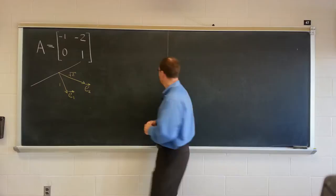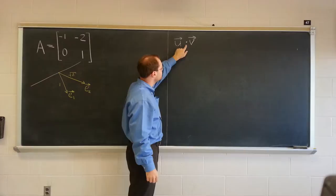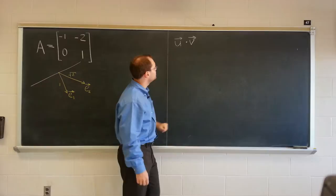So suppose we want to find u dotted with v. And this is not limited to geometric vectors. Maybe it would have been better to use the linear algebra notation where you put a comma here and surround it by parenthesis.